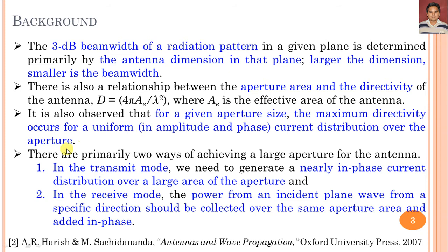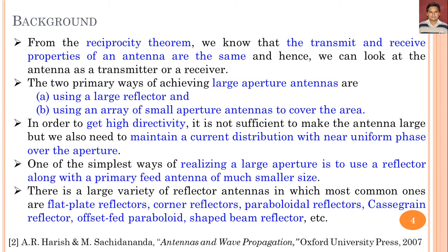There are primarily two ways of achieving large aperture. In the transmitting mode, we need to generate a nearly in-phase current distribution over a large area of the aperture. In the receiving mode, the power from an incident plane wave from a specific direction should be collected over the same aperture area and added in phase. By the reciprocity theorem, the transmit and receive properties of an antenna are the same.